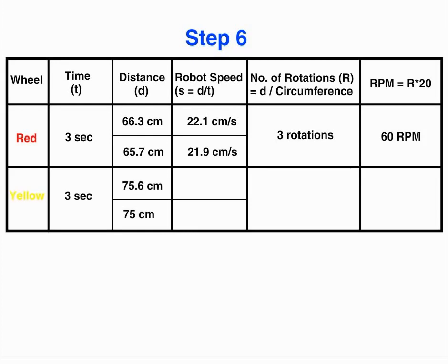For yellow wheel, I get these distances and we can see in the same amount of time we have traveled more distance. That means our speed is more. It is 25.2 centimeters per second in the first and 25 centimeters per second in the second reading, which is more than the robot speed when we had red wheels.